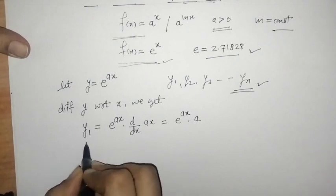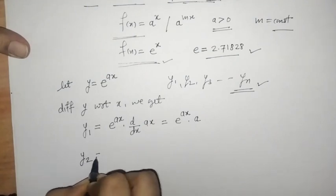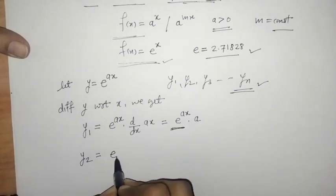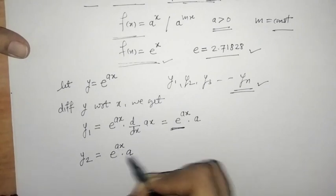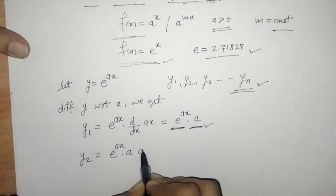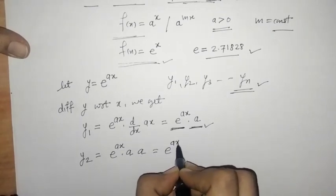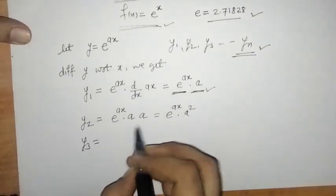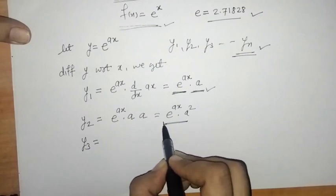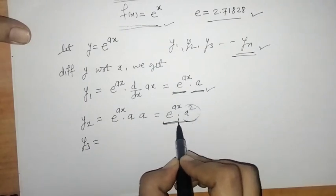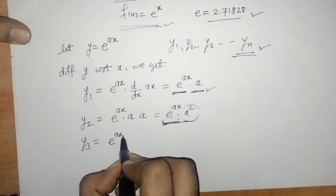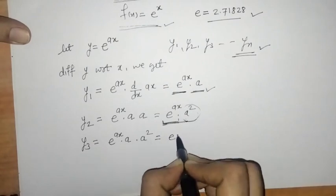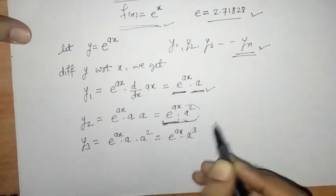Similarly, differentiating y1 we get y2. The derivative of e raised to ax is e raised to ax into a, and the a from y1 remains as it is. So the second derivative y2 equals e raised to ax into a squared. Similarly, differentiating y2, since a squared is constant, the derivative of e raised to ax gives e raised to ax into a, so y3 equals e raised to ax into a cubed.